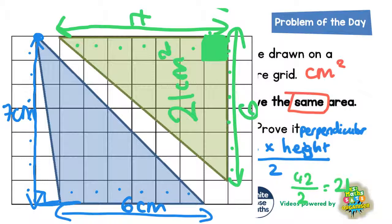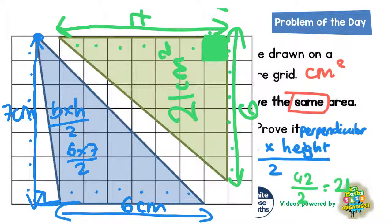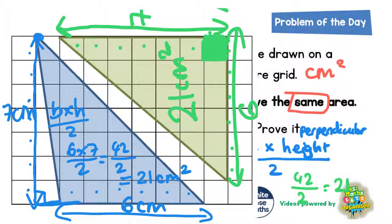To work out the area of the blue triangle, we do base times height divided by two: six times seven divided by two. Six times seven is 42, and 42 divided by two is 21 centimeters squared.